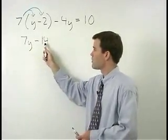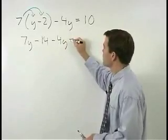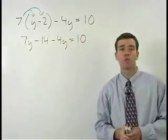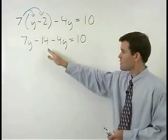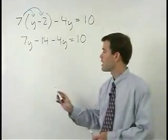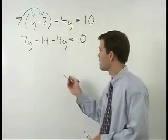So we have seven y minus fourteen minus four y equals ten. The difference between this problem and the previous example is that you can simplify this left side one step further by combining seven y minus four y to get three y.